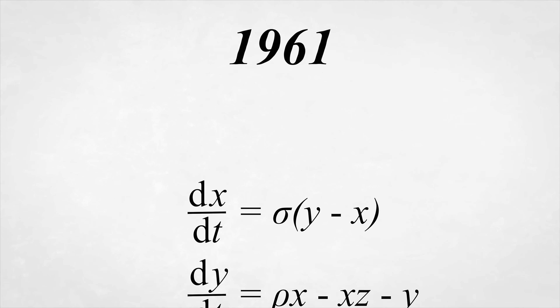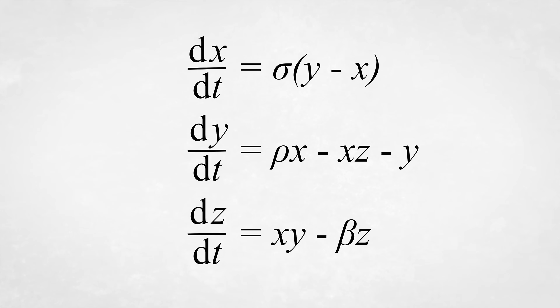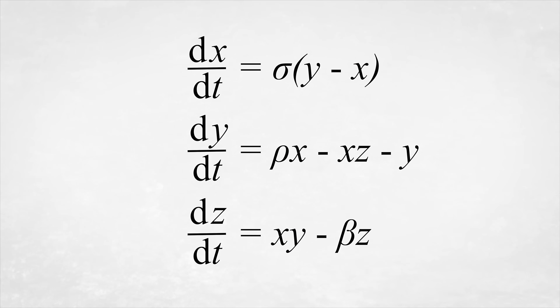which some experts advocated for. In 1961, he was looking at a set of three simple equations representing a very simple dynamical model of the Earth's atmosphere. These equations tell you how three variables — x, y, and z — evolve as time goes on.